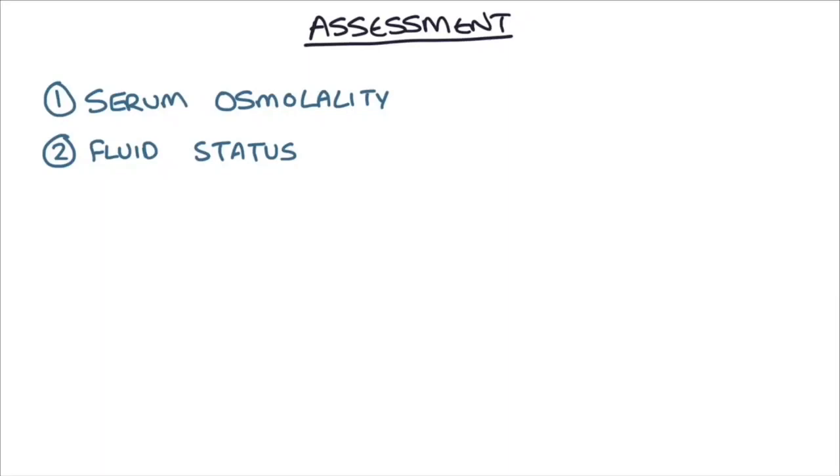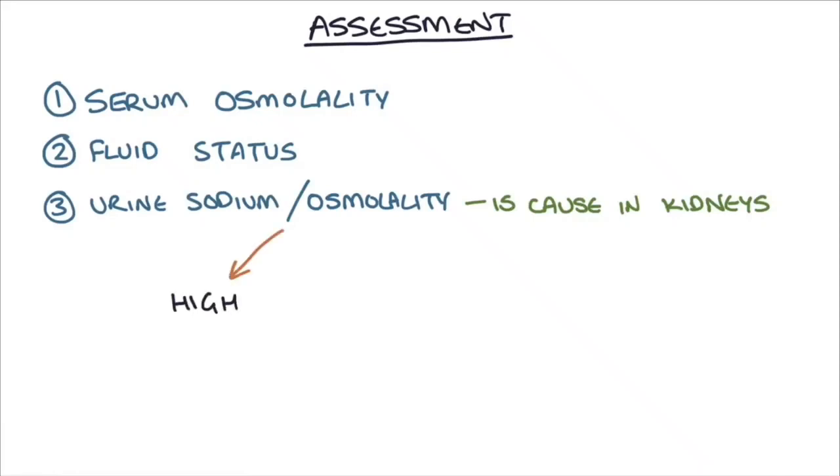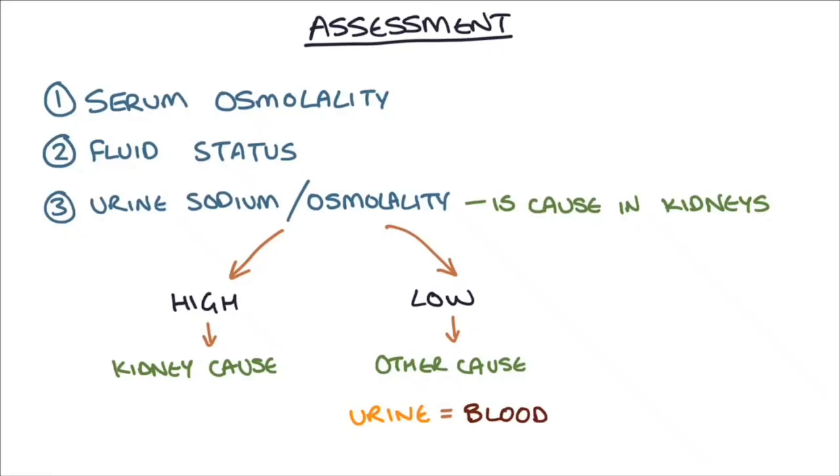Once you've checked the person's fluid status, the next thing is to look at the urine sodium or urine osmolality. This simply tells you whether the patient's cause of the hyponatremia is in the kidneys or is somewhere else. If the urine sodium or urine osmolality is high, you know the problem's in the kidneys. If the urine sodium or urine osmolality is low or normal, you know the problem is somewhere else because the urine osmolality is reflecting the osmolality of the blood, which means the kidneys are working normally.